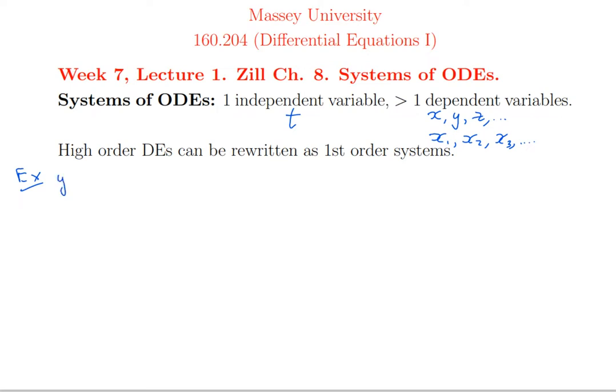So we'll take y double prime minus 4y prime plus 4y equals 0. I'm going to make a new dependent variable, it'll be u and it's just defined to be equal to the first derivative of the other dependent variable, the old one. And in terms of these two variables, u and y, I can rewrite this as a first order system. Well the derivative of y, y prime, I see that that's got to be equal to u, because that was just the definition of my new variable u.